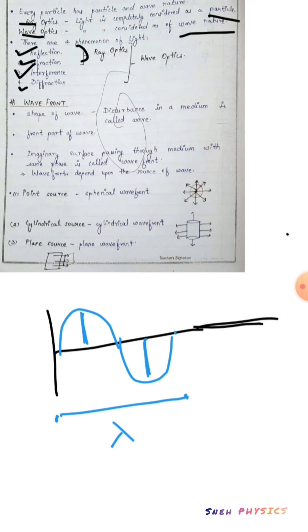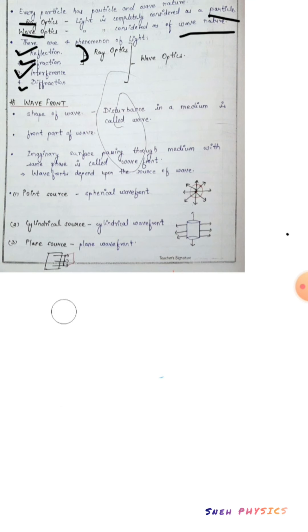This we have already studied in our earlier classes. In Wave Optics, we are not going to study the basic things of a wave. We are taking into account another new term that is known as wavefront. Let's see what is a wavefront. Wavefront, as the name suggests, is the front portion of a wave. The front part of a wave is known as a wavefront. We know that the wave is a disturbance in a medium.